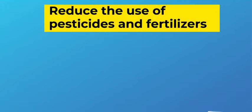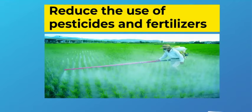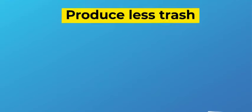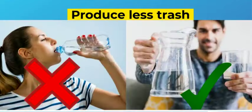As a second solution, we can reduce the use of pesticides and fertilizers in agricultural activities. Finally, we need to produce less trash. For example, instead of drinking water out of plastic bottles, we could just drink it using a cup.